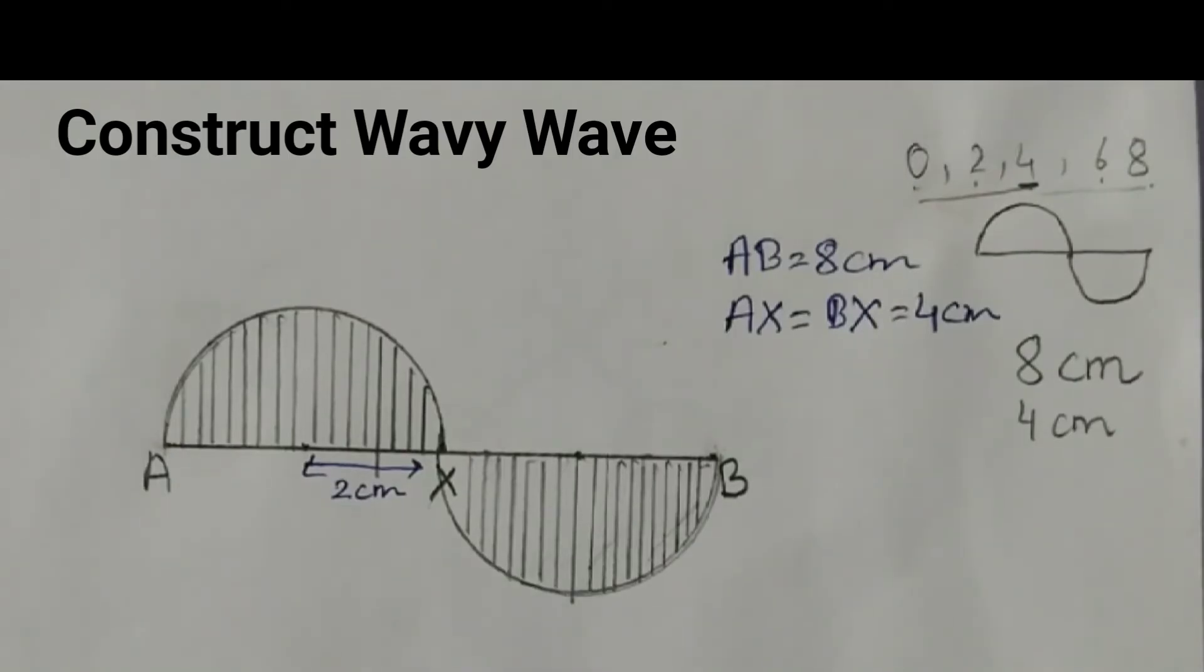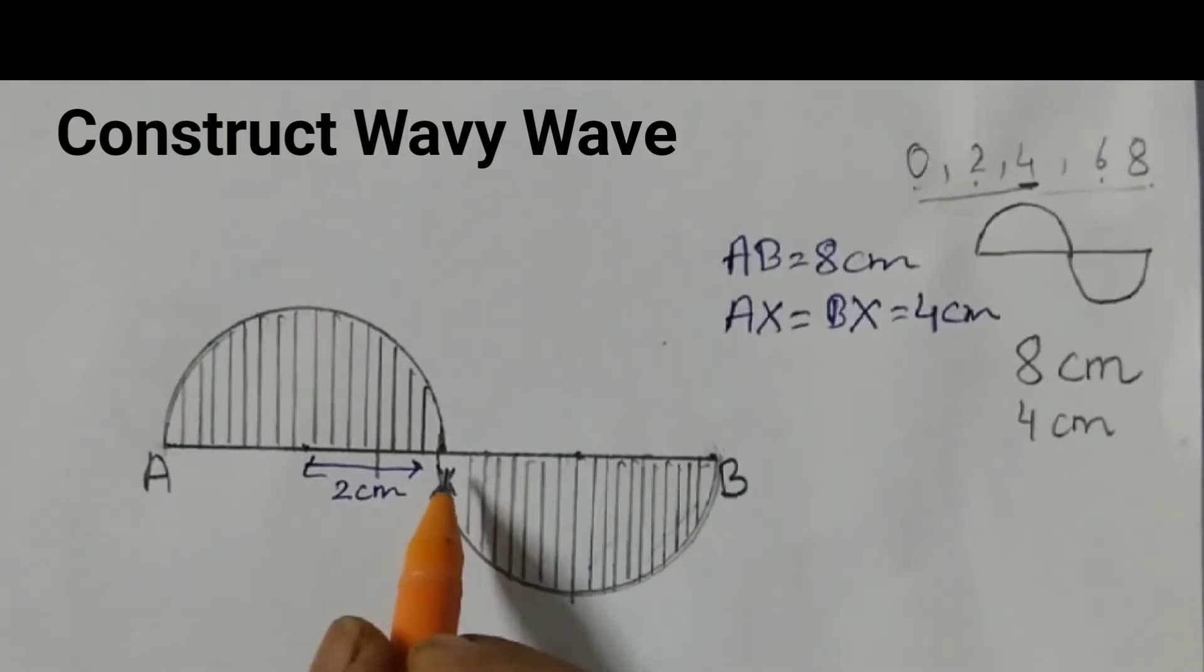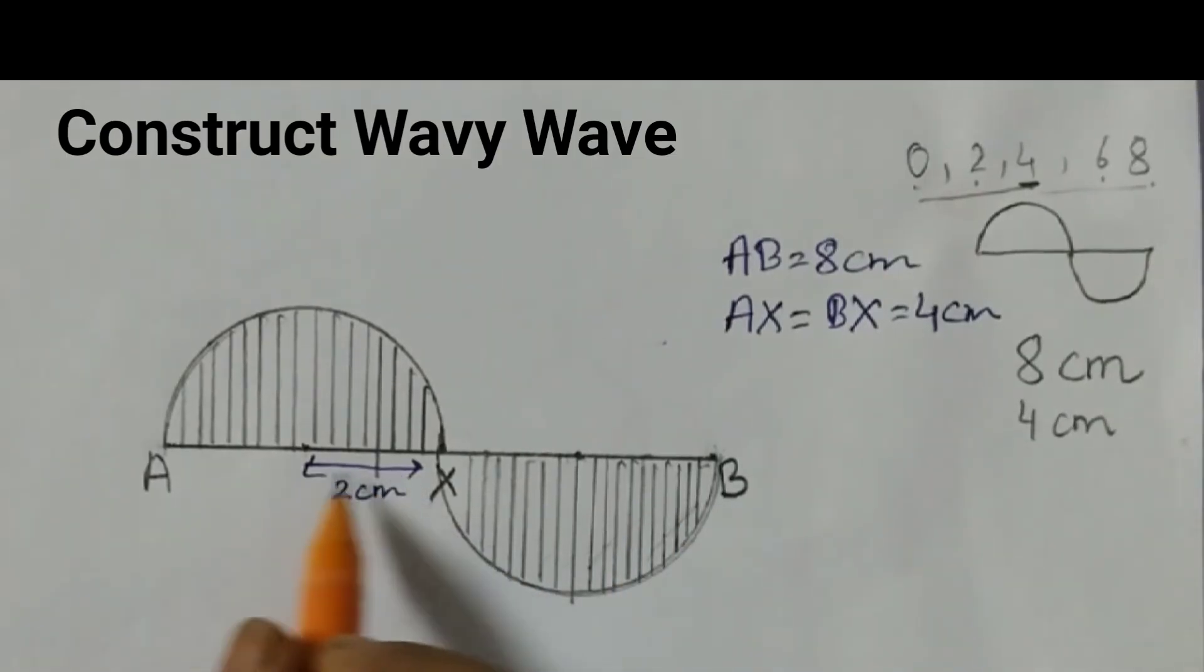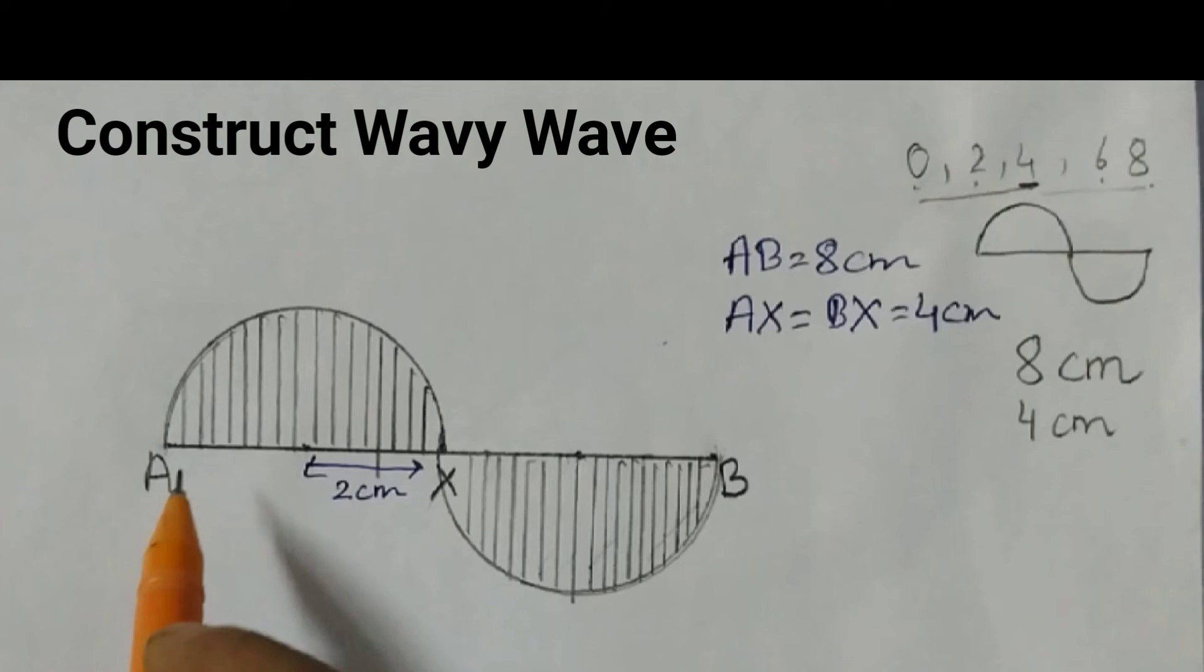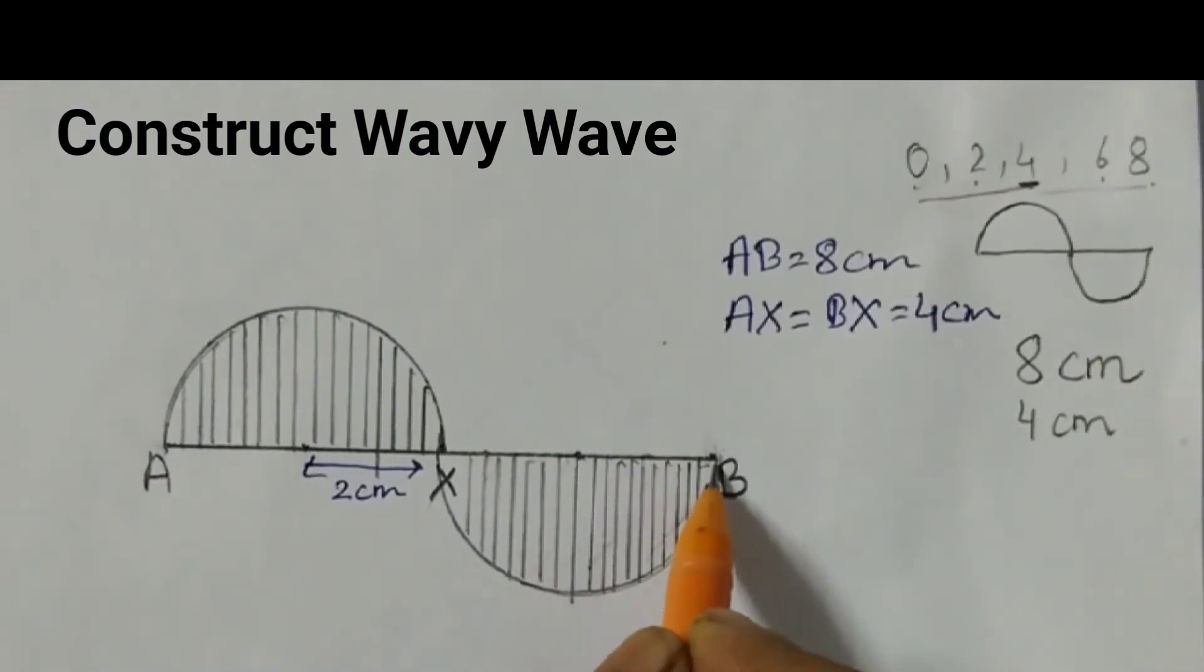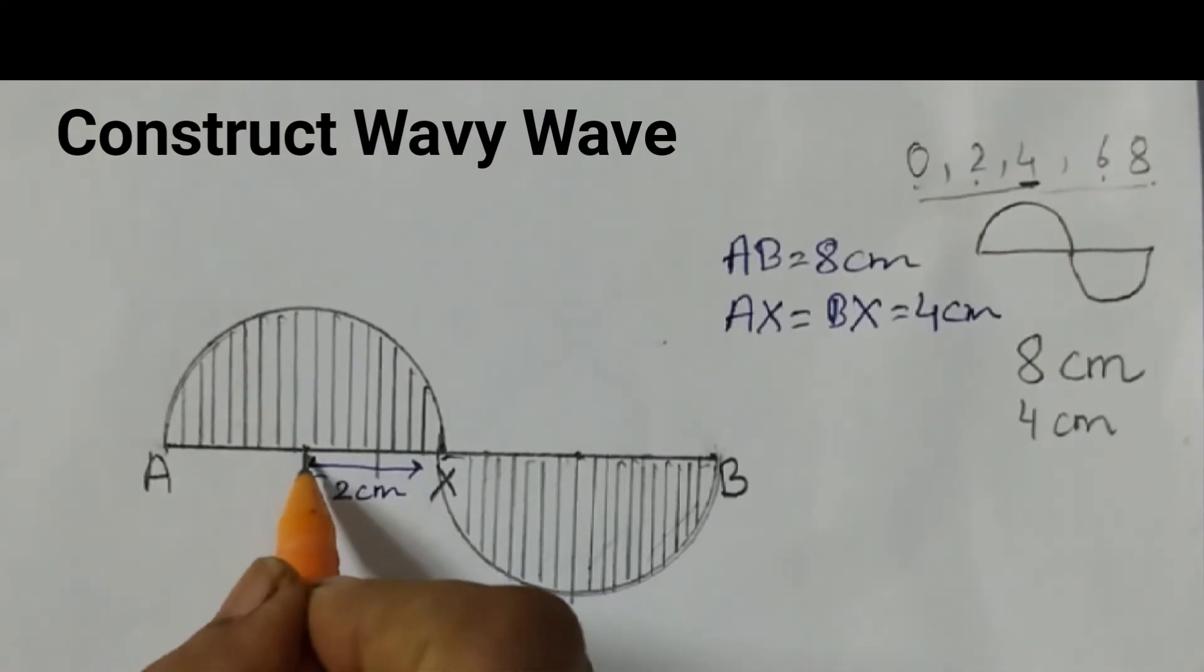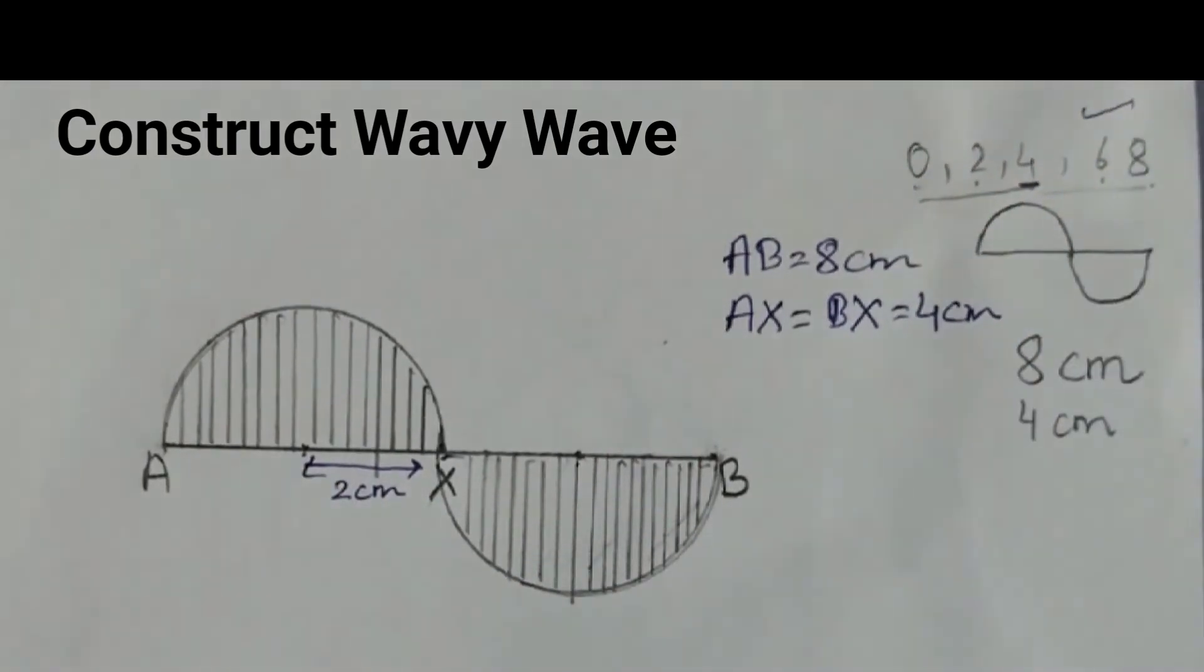So that is how you need to draw wavy wave. So the measurements: A to B is 8 centimeter, A to X is 4 centimeter, X to B is also 4 centimeter and this is 2 centimeter. In the very beginning itself if you mark those points, one point here at 8 centimeter, then at 4 centimeter, this is at 2 centimeter and this is at 6 centimeter. See I have written the numbers here. Then it will be very easy for you to construct this wavy wave.